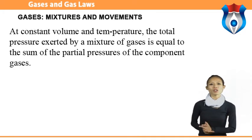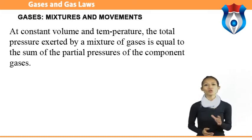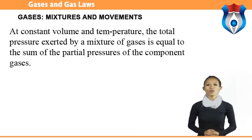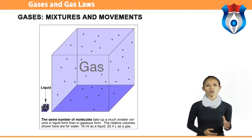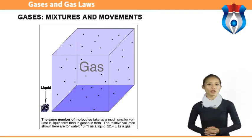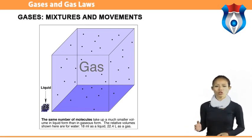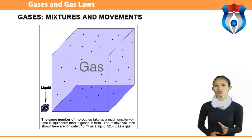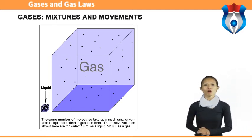According to Dalton's law of partial pressures, at constant volume and temperature, the total pressure exerted by a mixture of gases is equal to the sum of the partial pressures of the component gases. Molecules tend to move to areas of lower concentration until the concentration is uniform — this process is called diffusion. During effusion, a gas escapes through a tiny hole in its container. The rate of effusion of a gas is inversely proportional to the square root of the gas molar mass, as described by Graham's law of effusion.